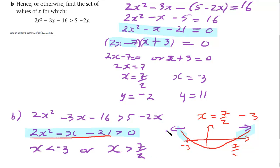So x is less than minus 3 is the business going on here. And this is the x is bigger than 7 over 2 going on here. And that is our final answer.